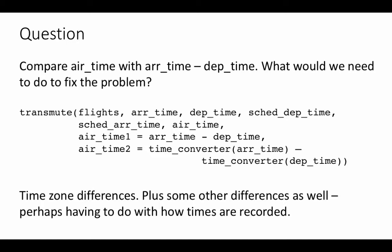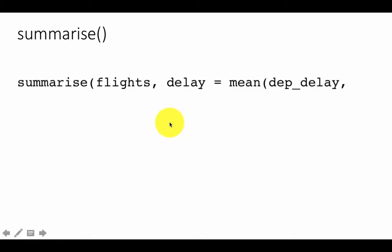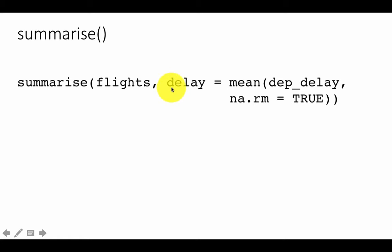Let's look at one more function — the summarize function. The summarize function is intended to create summaries of data. A common example would be computing the mean. Here I'm calling summarize on flights: the first argument is the table or data frame to operate on, then we create a new summary column called 'delay' computed by taking the mean of departure delay.